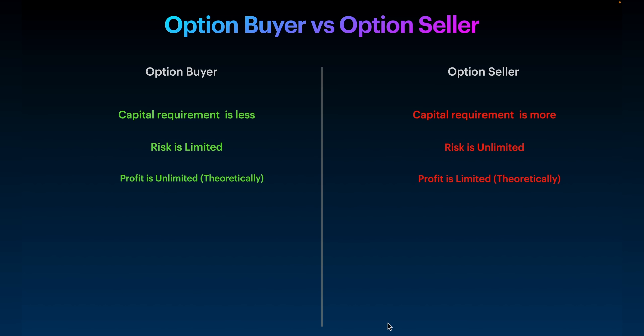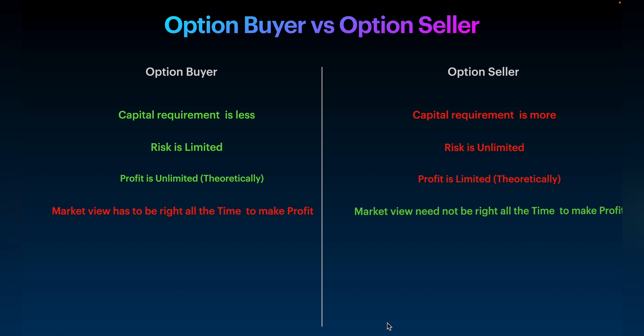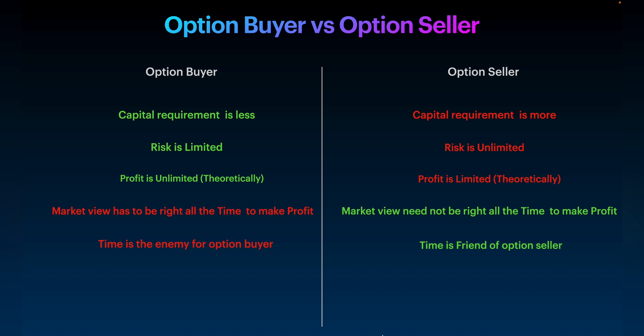Traders, we have discussed three differences between option buyer and option seller. Looking at all three, it looks like being an option buyer is better — capital requirement is less, risk is limited, profit is unlimited. But we need to understand that being an option seller also has its own advantages. An option buyer's market view has to always be right to make profit. But for an option seller, the market view need not be right all the time. In option trading, time is enemy for option buyer and time is friend of option seller.